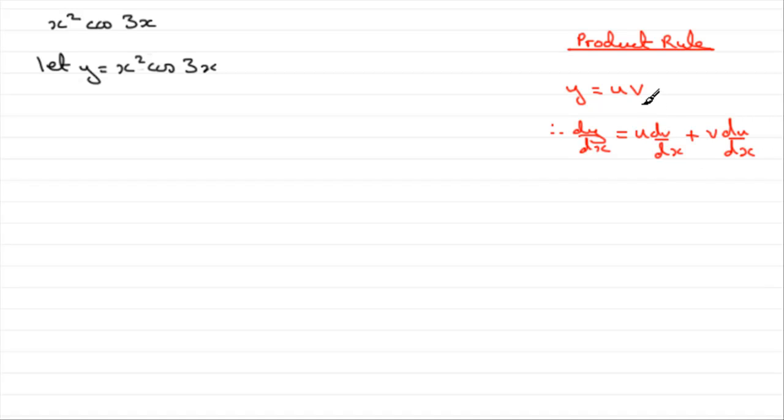In other words, all you need to do is take one of the functions of x, multiply it by the differential of the other and then just plus and then do it the opposite way around. Okay, so let's just see what we can do for this. The x squared I'm going to take as u and the cos 3x I'm going to take as v.